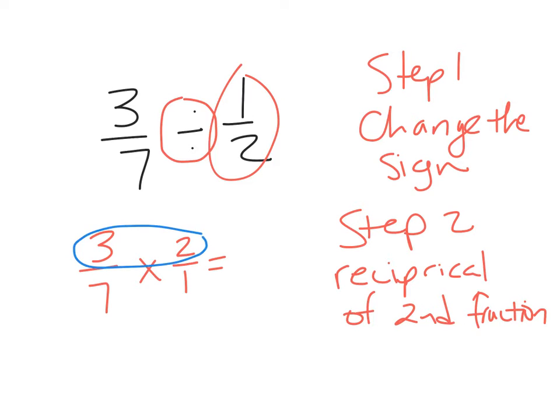So this becomes two over one. Okay, multiply straight across. Three times two is six. Seven times one is seven. Six over seven would be my final answer.